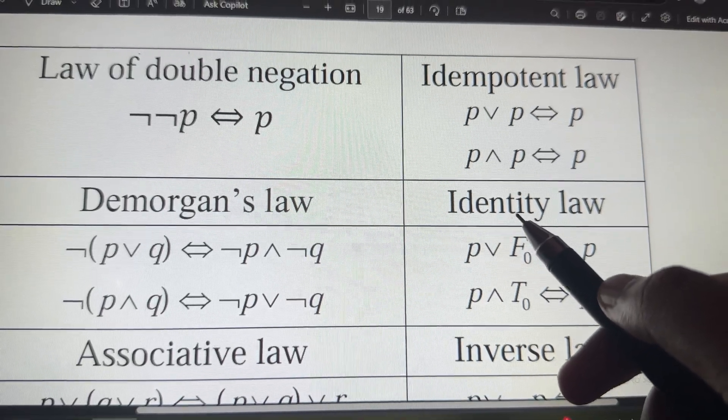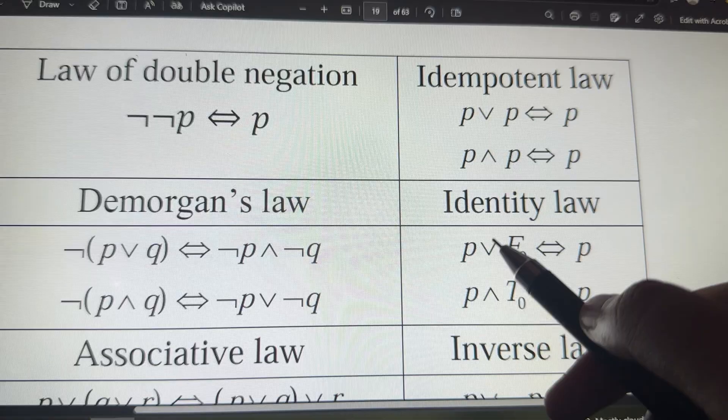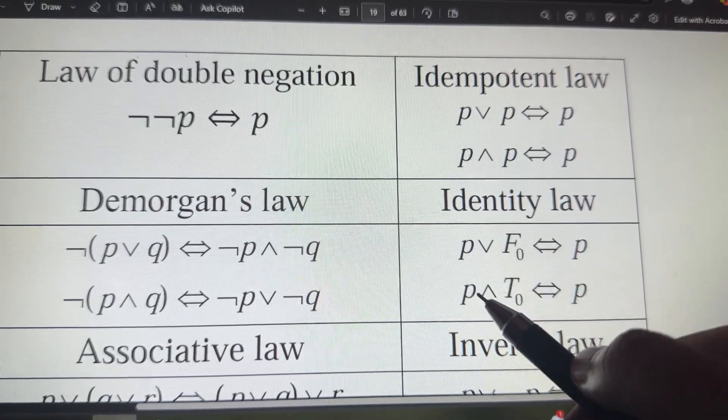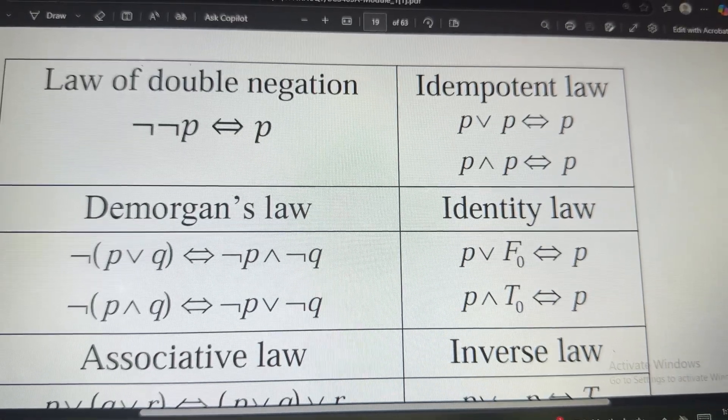Then, coming to identity law. In identity, it is false or true. So, in case of OR, it is false. In case of AND, it is true. Answer will also be true.